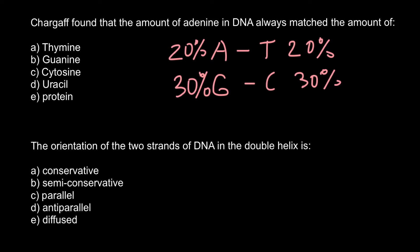Watson and Crick took known pieces of information and assembled them just like a puzzle into one picture. Chargaff's findings were very important. Now we know that adenine base pairs with thymine, and guanine base pairs with cytosine — that's why the amounts are always equal.